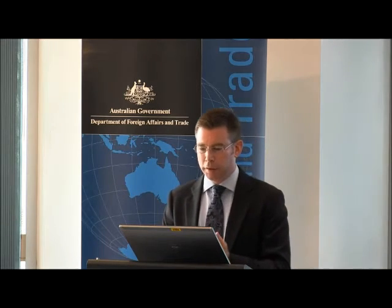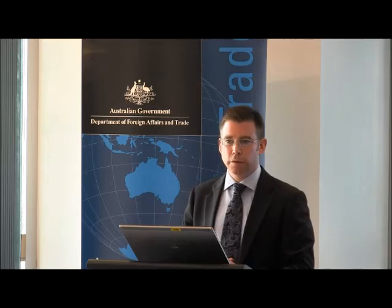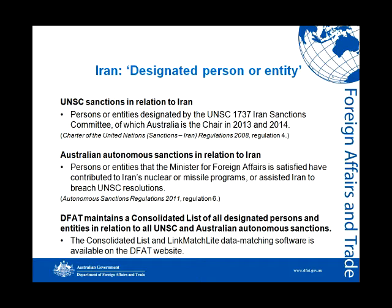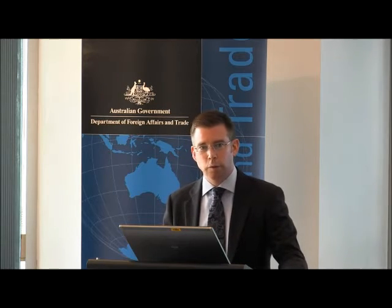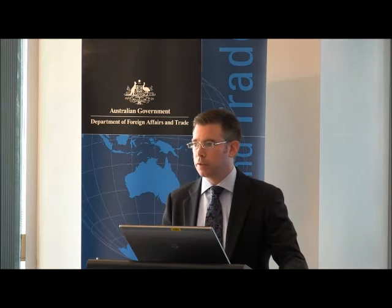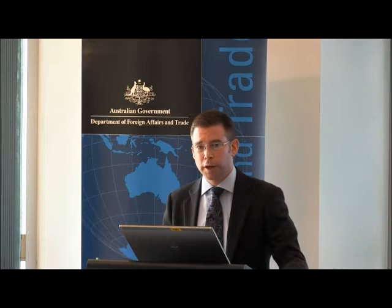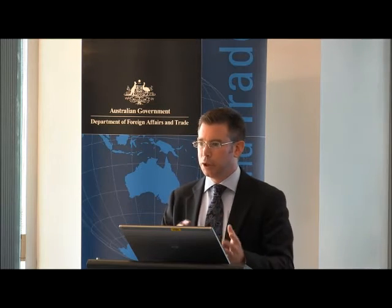That raises the question of who is a designated person or entity — again there are differences for UNSC versus autonomous sanctions. For UNSC sanctions in relation to Iran, we're talking about persons or entities designated by the UNSC Iran Sanctions Committee. For our autonomous sanctions, we're talking about persons or entities that the Minister for Foreign Affairs is satisfied have contributed to Iran's nuclear or missile programs, or assisted Iran to breach UNSC resolutions. We provide a consolidated list on our website of all designated persons and entities for all UNSC and Australian Autonomous Sanctions regimes. We also make available a software program called LinkMatch Lite — a data matching program that can help you check if a person is on the list.